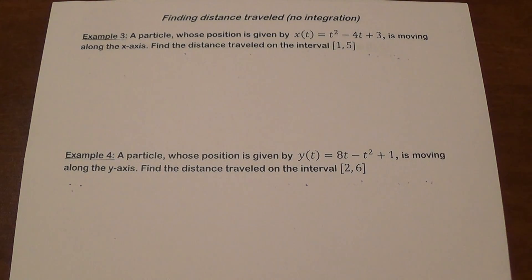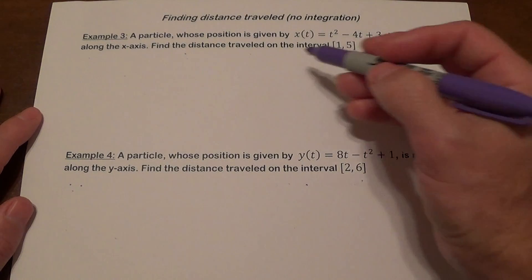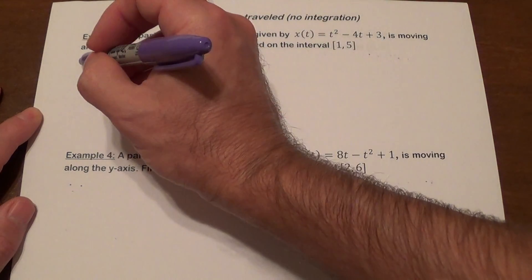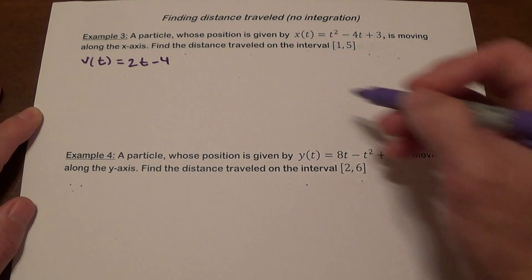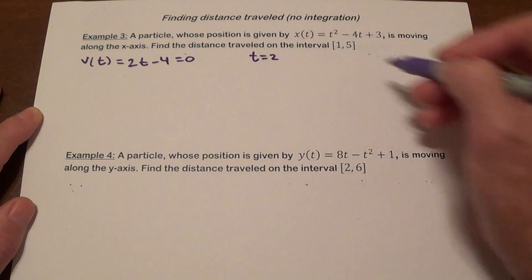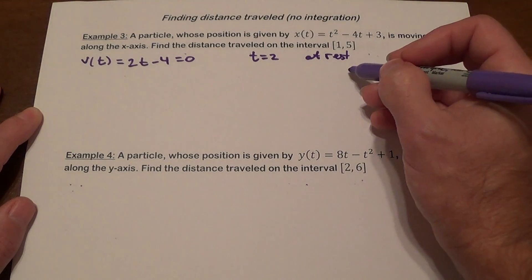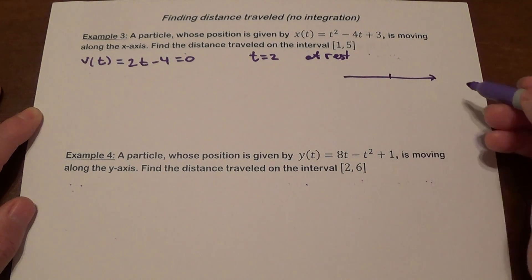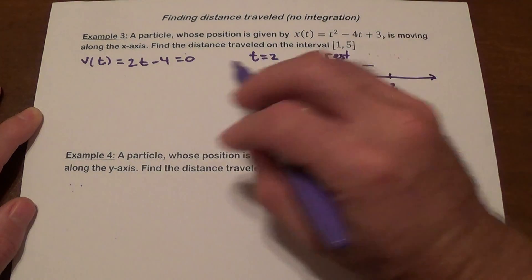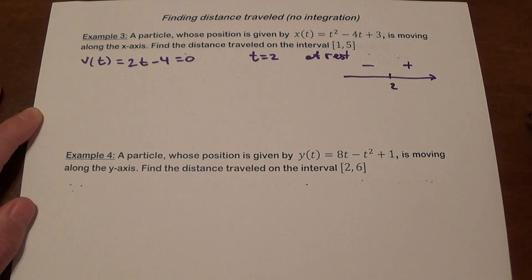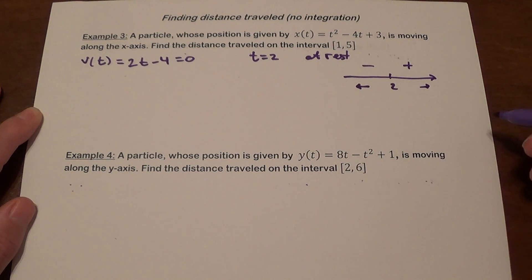Now we have situations where things get a little different. The position function is t² - 4t + 3. We find v(t) = 2t - 4, set it equal to 0, and get t = 2, so the object is at rest at t = 2. We do a number line sign chart: to the left of 2 the velocity is negative, and to the right it's positive. So the object is moving left then right — it changes direction at t = 2.